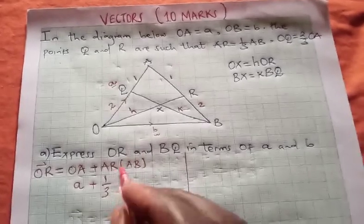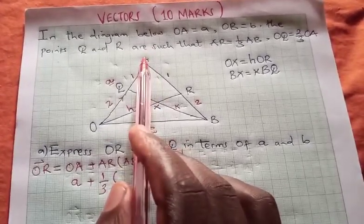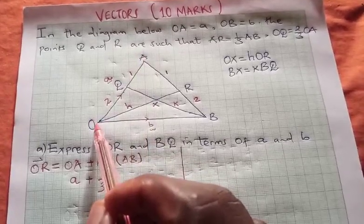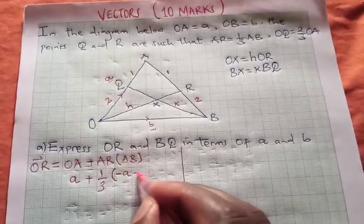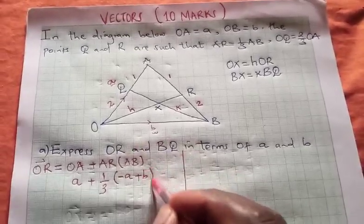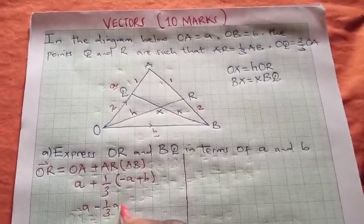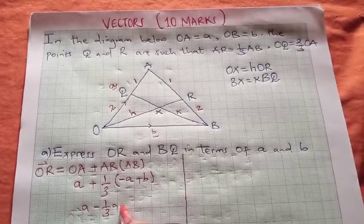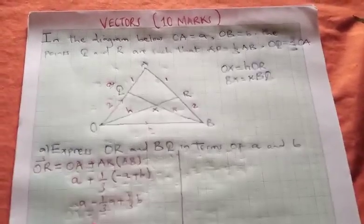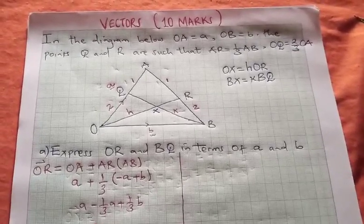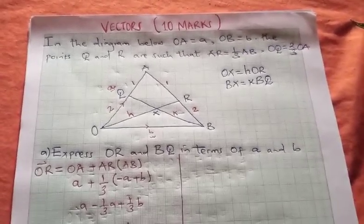Do we have AB? We don't have, so let us find AB. For you to move from A to B, you will use this route, which is AO, and this time round you are going against the arrow, so we are going to have a negative here, plus OB which is vector b. So we have a minus a third a, then plus a third b. When we put the like terms together, we get this to be 2/3 a plus 1/3 b, and this is our OR.